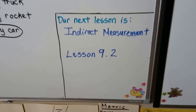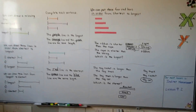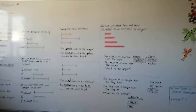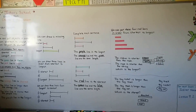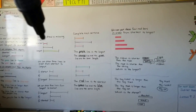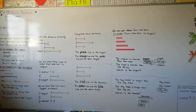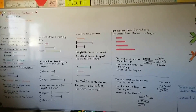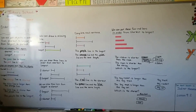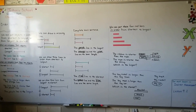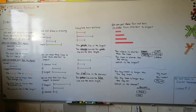Our next lesson is going to be indirect measurement, Lesson 9.2. You can make your own bars, and you can get some yarn or string and make short ones, long ones, and medium ones, and put them in order from shortest to longest. You could even do it with four, five, or six strings and see which is the shortest and longest. Keep trying — I'm very proud of you. I hope you have a great day, and I'll see you next time. Bye!